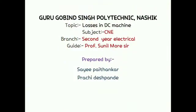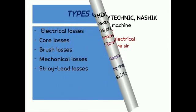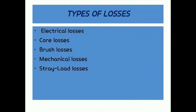Hello everyone. I am from Guru Govind Singh Polytechnic, Nashik. This presentation is prepared by Sahih Rajendra Paitankaran, Prachayan, and Despante. We are second year electrical engineering students. Our micro project topic is losses in DC machines — types of losses: electrical losses, core losses, brush losses, mechanical losses, and stray load losses.